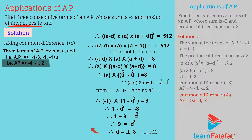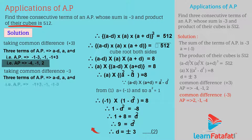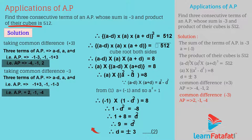Now taking common difference d equal to minus 3, we get the 3 terms of the AP as a minus d, a, a plus d — that is, minus 1 plus 3, minus 1, minus 1 minus 3 — which gives the AP as 2, minus 1, minus 4.